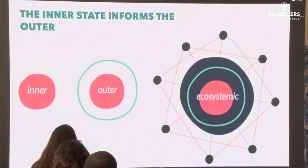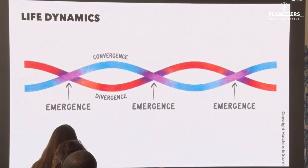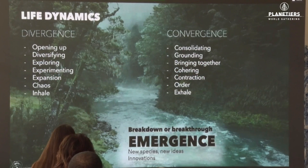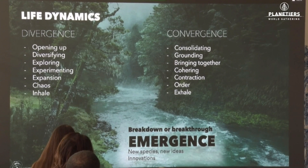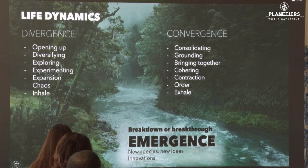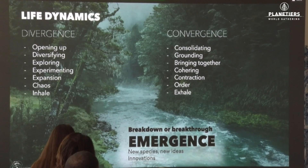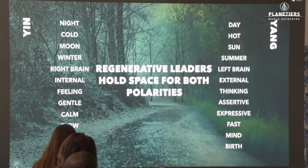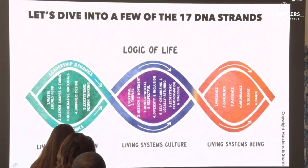Life dynamics is this oscillating energy between convergence and divergence. Divergence is that energy where we are opening up, diversifying, getting input — maybe running a hackathon or workshop, getting many different opinions on the table. But it becomes too chaotic if we don't also have the energy of convergence, where we consolidate, ground, and find the essence. In that oscillating dance between the two polarities, we have emergence — new ideas, new life, new technologies, new innovations. Regenerative leaders are alchemists of transformation, holding space for opposites.